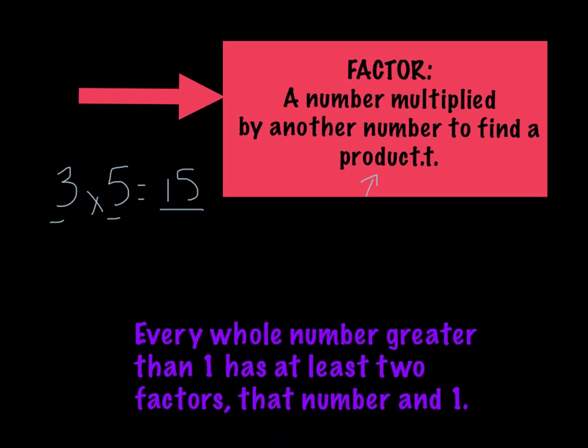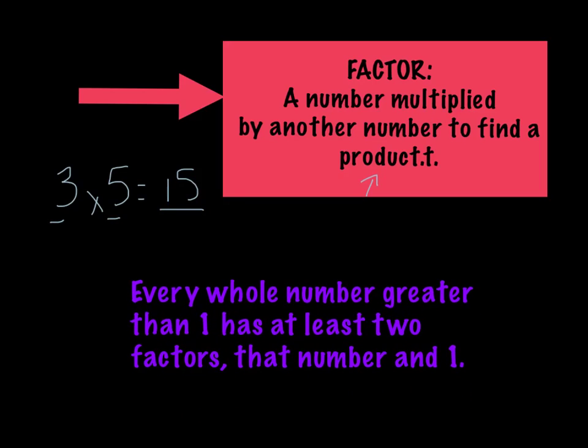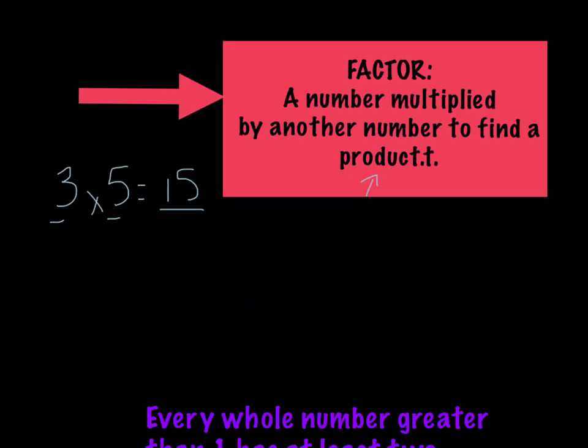Now it's also important for you to know that every whole number greater than 1 has at least 2 factors. They'll always have that number and 1. For example, the number 7 will have the numbers 1 and 7 to be its factors. The number 4 has more than just 1 and itself. It has 1 times 4, but it also has 2 times 2. Let's think about the number 6. It has 1 times 6, but it also has 2 times 3. Then we have the number 11. I know 1 times 11 equals 11. There's no other factors that equal 11 except 1 and itself.